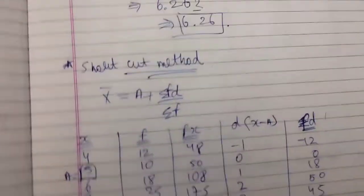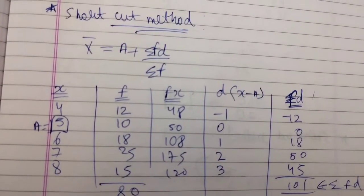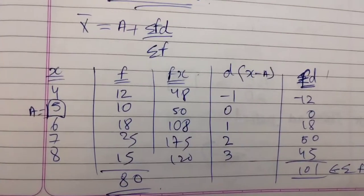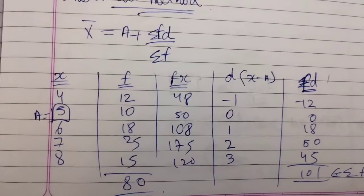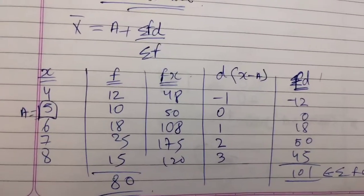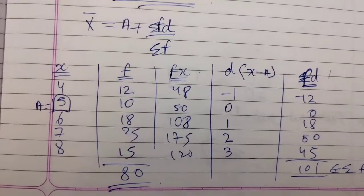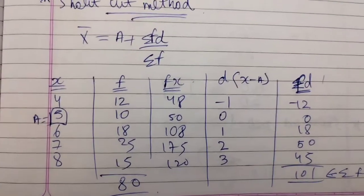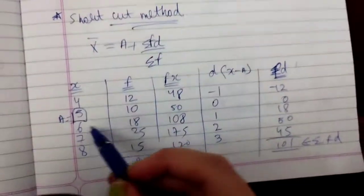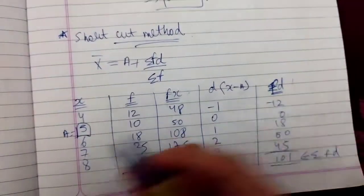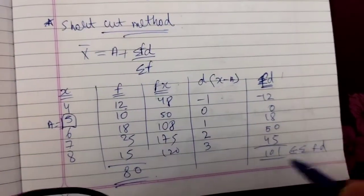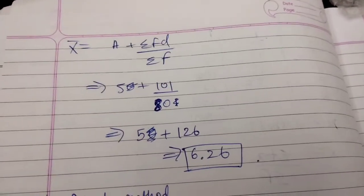Now for the shortcut method on the same discrete data, the formula is A plus Sigma fd upon Sigma f. We already have x, f, and fx from the previous method. We now need to find D and fd. I take A = 5, compute D = X minus A for each value, then multiply D by f to get fd. After totaling Sigma fd and applying the formula, the answer is again 6.26.